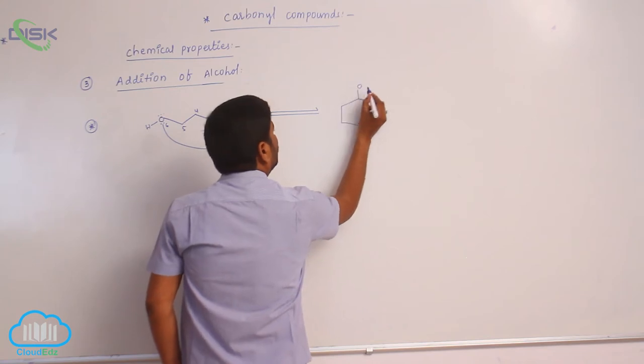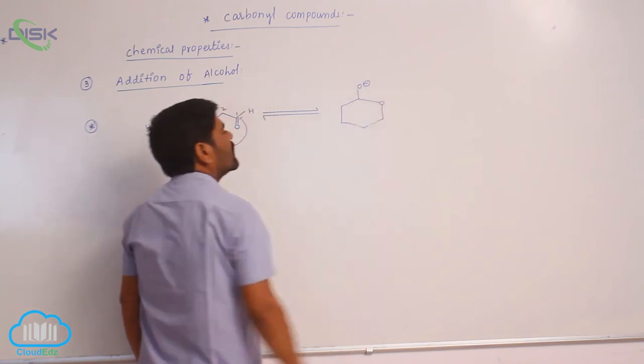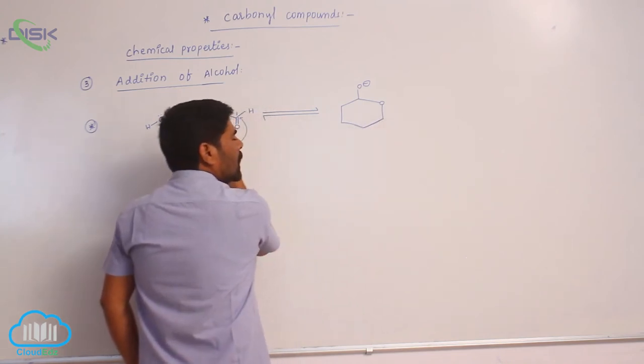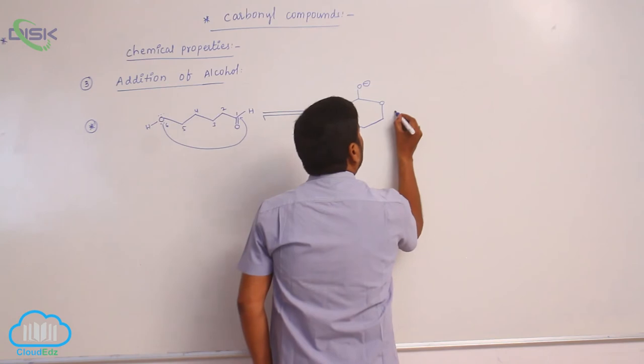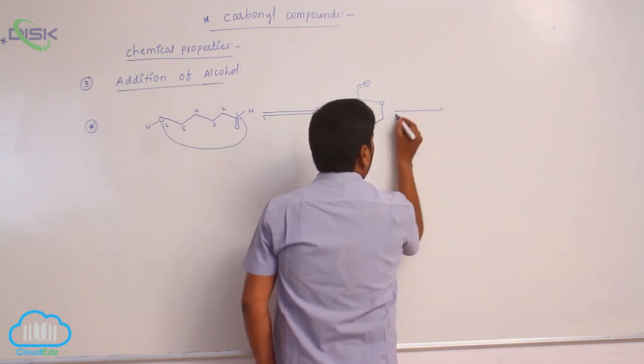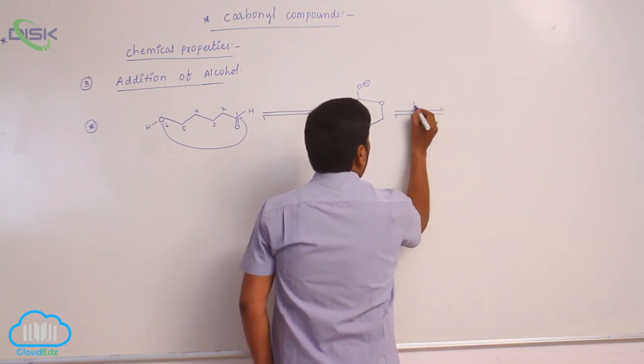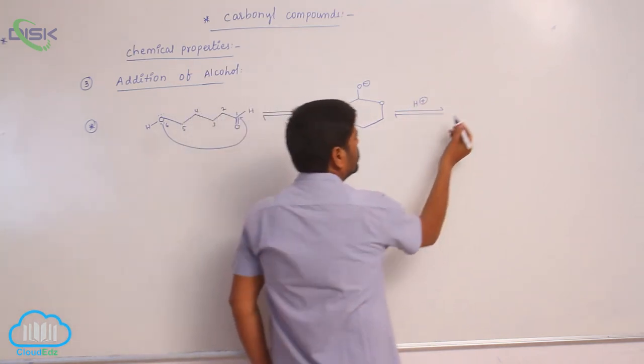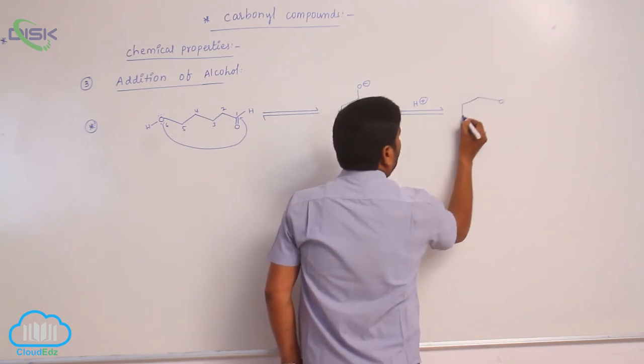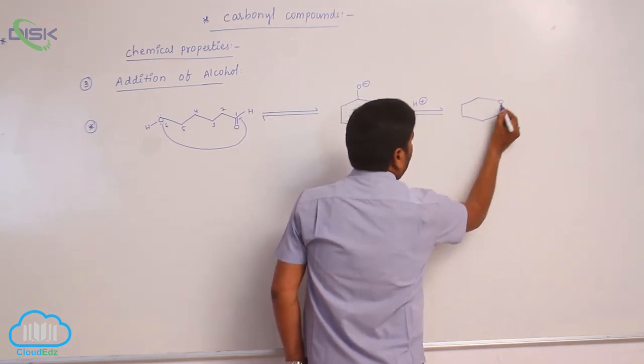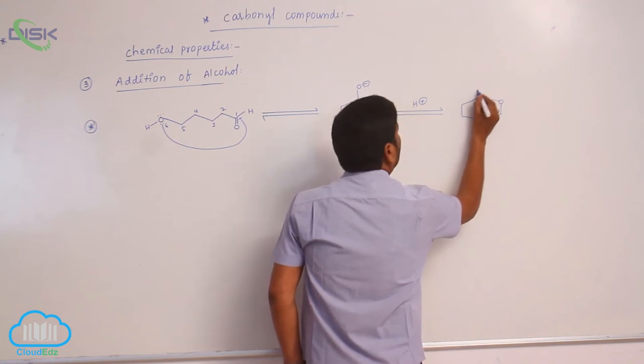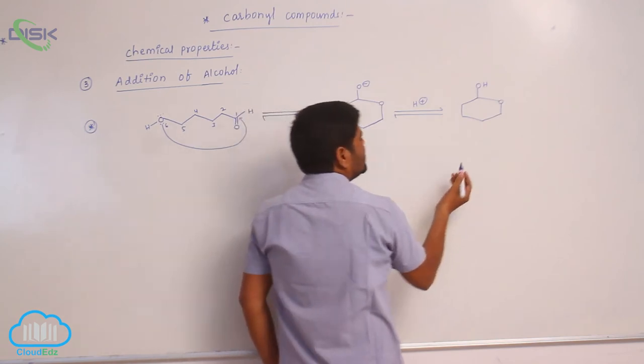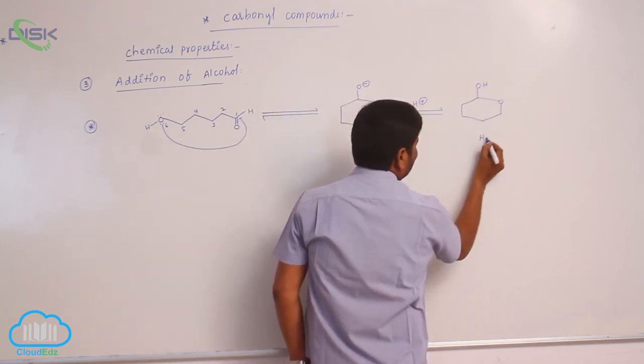Here is what, O minus. Now which is added, H plus is added, it forms here is OH. This is known as hemiacetal, which has told is hemiacetal.